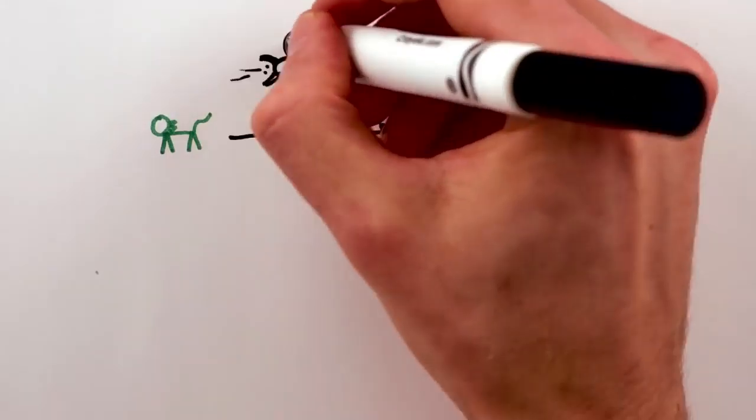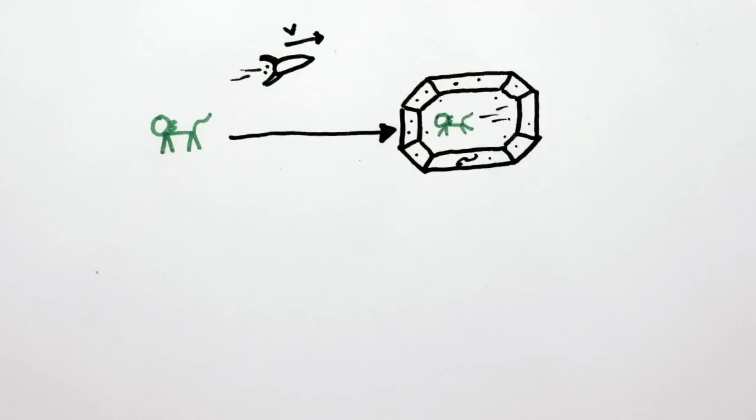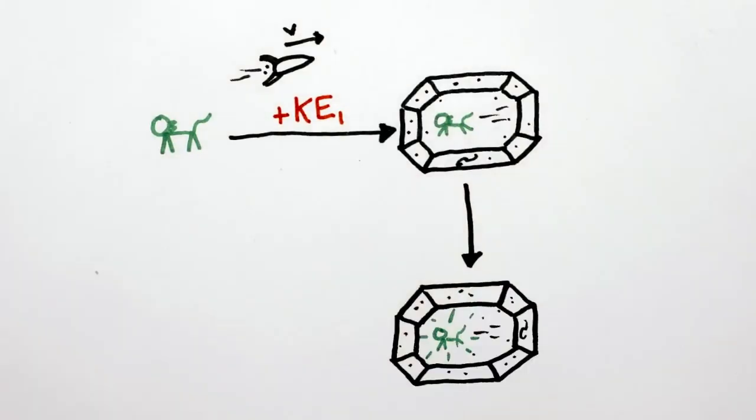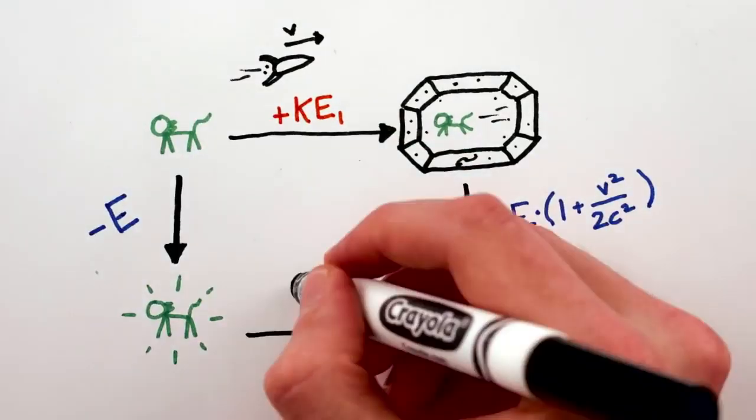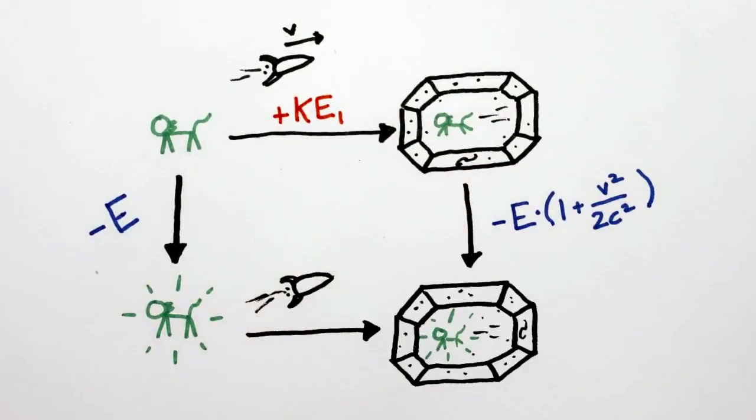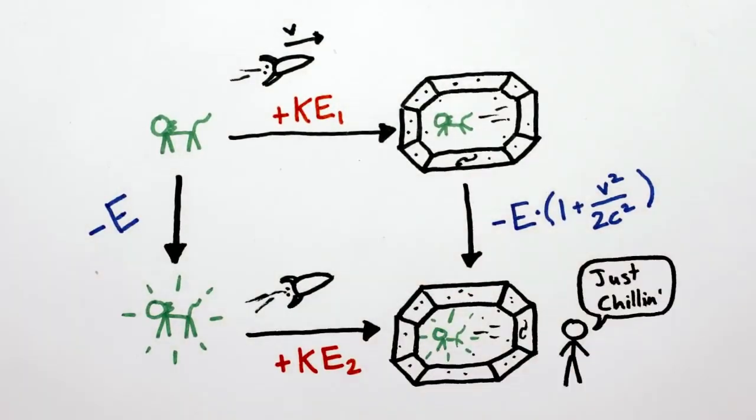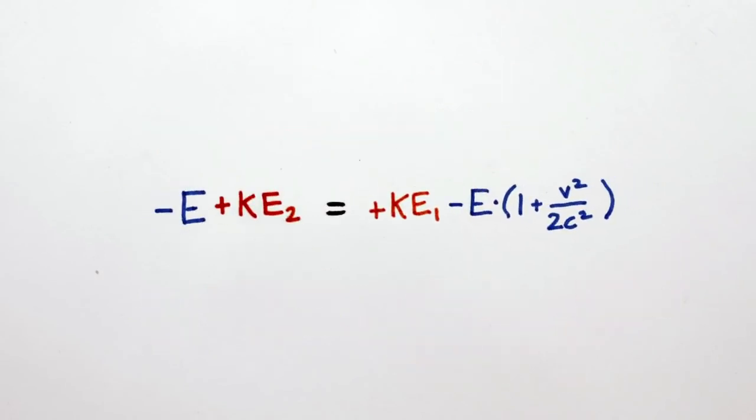So to recap, if you take off at velocity v, you'll see the cat gain some kinetic energy KE1, then at the flash you'll see the cat's energy decrease by E times 1 plus v squared over 2c squared. On the other hand, if you wait, you'll see the cat's energy decrease by E, and now when you take off, you'll see it gain kinetic energy KE2. But this is silly. You never touch or otherwise influence the cat in either case, so we should get the same total energy at the end.